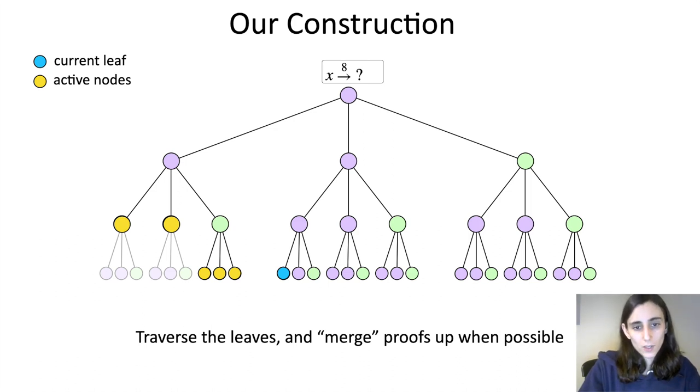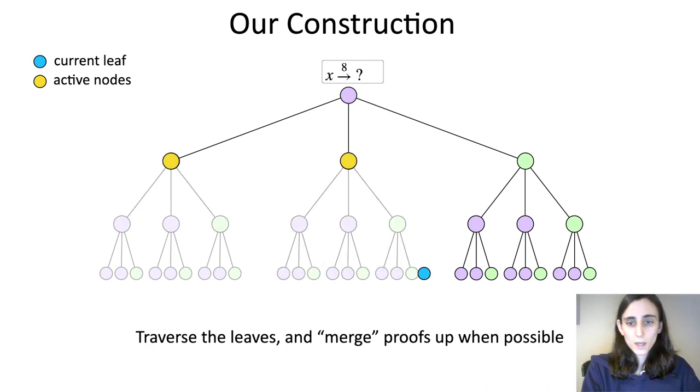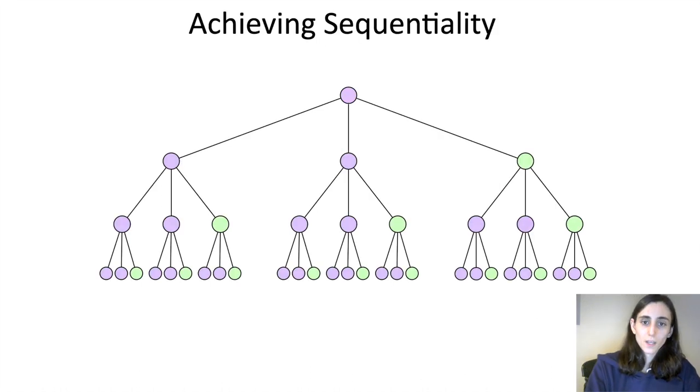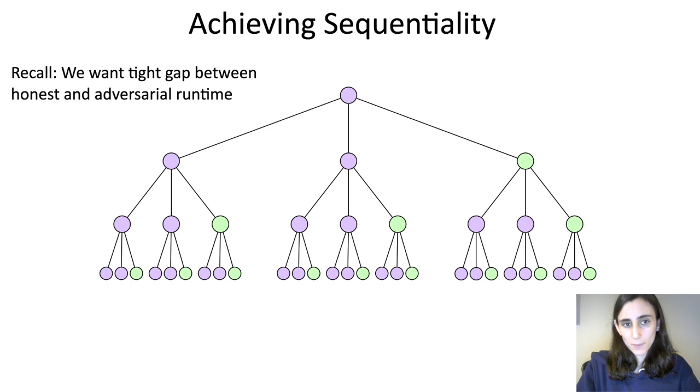So what we've done here is we've definitely made it so that our state is verifiable at any point in time. The question is, is it still a delay function? Namely, can computation of our new hopefully continuous VDF be sped up? Recall that what we really want here is a tight gap between the honest running time and the adversarial running time. We don't want the adversary to be able to speed up computation of the continuous VDF.